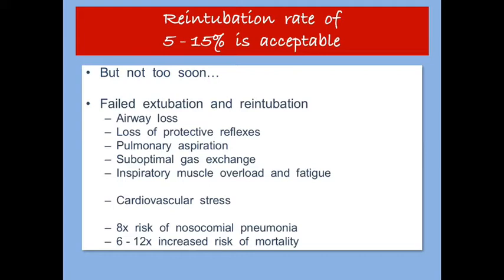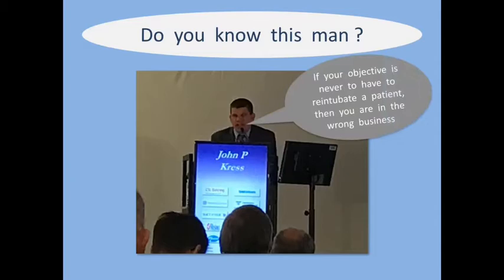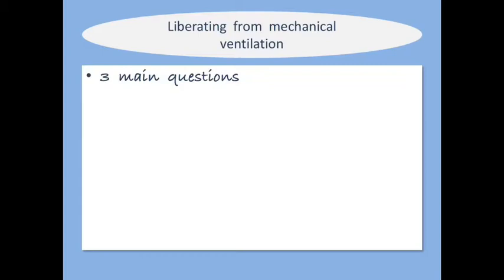It's important to strike a balance between extubating as soon as possible and not subjecting the patient to the stressors of failed extubation. However, you must have some re-intubation rate in your ICU. If you extubate everybody very late and have zero re-intubation rate, you're too conservative. If your rate is 25% or above, you're too aggressive. Aim for a re-intubation rate between 5 and 15%, which is acceptable. John Kress was famously quoted as saying: if your objective is never to have to re-intubate a patient, then you are in the wrong business.